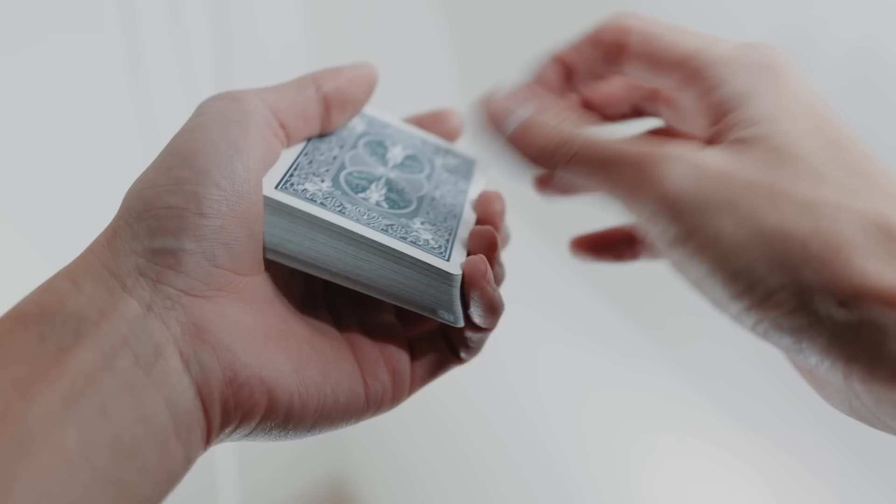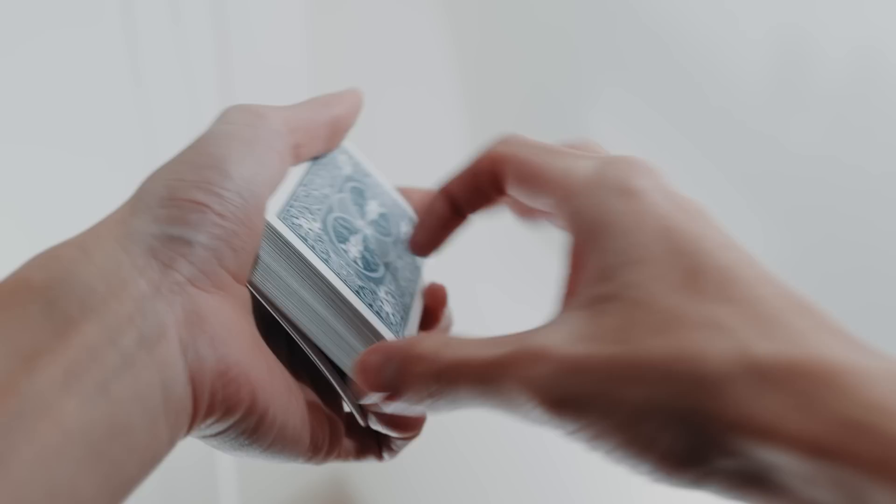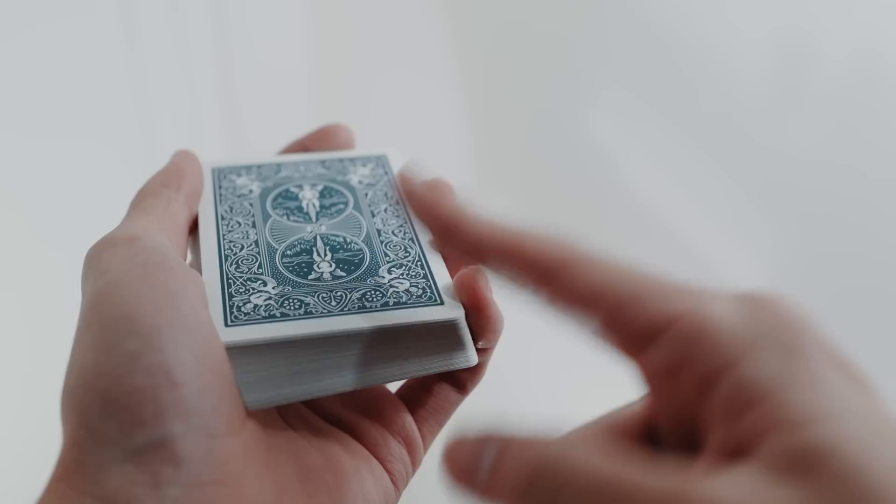Now there are ways in magic to cleanly flip over this third card without the spectator seeing, so you can start from a borrowed shuffled deck of cards, and Wade is demonstrating how to do this here. However, this is outside the scope of the tutorial, but I'll leave a link to the move that he's doing in the description below.